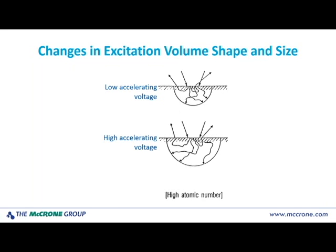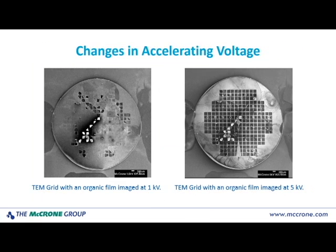If we take a look at a higher atomic number material — maybe a metal — basically what happens is the upper half of the excitation volume goes away. It gets cut off because there are so many protons and so many orbiting electrons that as soon as the electrons from the beam strike the surface, there is almost instantaneous interaction and scattering. So the excitation area is on the surface. But we're still getting x-rays generated from a pretty good distance away.